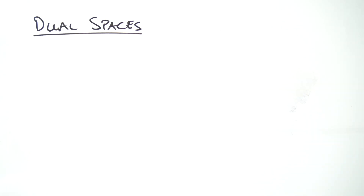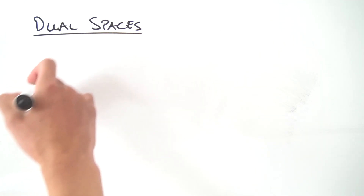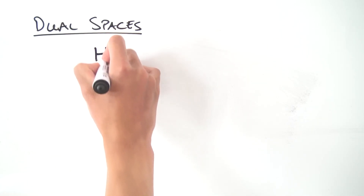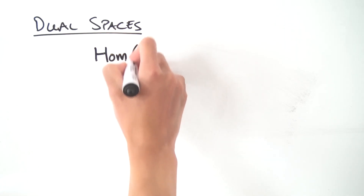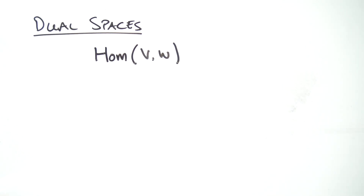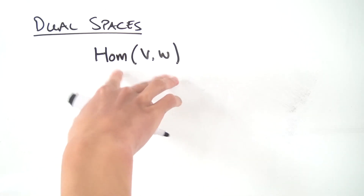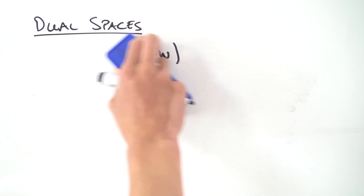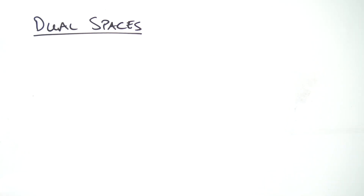If you haven't watched my videos on vector spaces yet, you should probably do that — link in the description, or it's probably in a playlist on my channel. There are also videos on examples, and another prerequisite is the video where we discussed vector space homomorphisms. In particular, we constructed the vector space Hom(V,W), which is the vector space of linear maps between two vector spaces, and we will need this to construct our dual spaces.